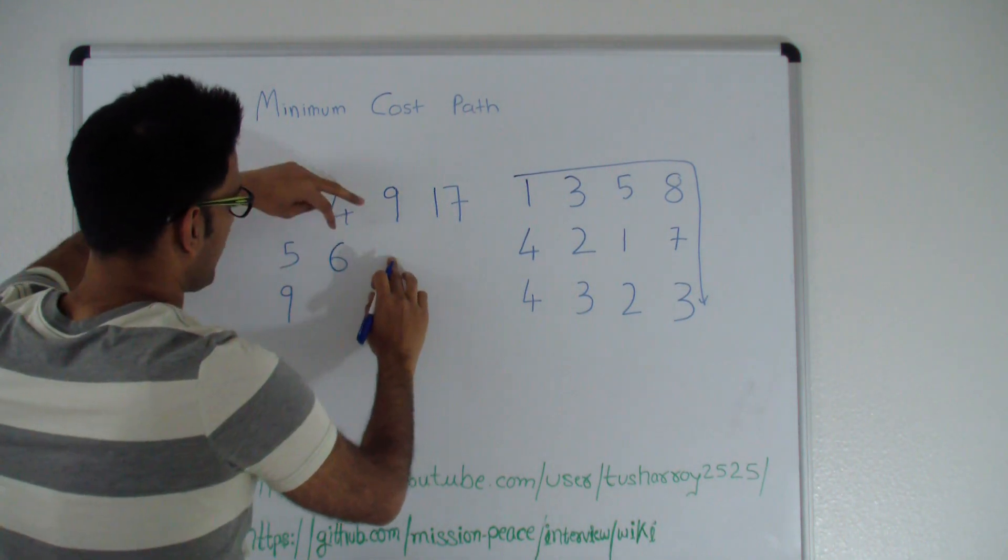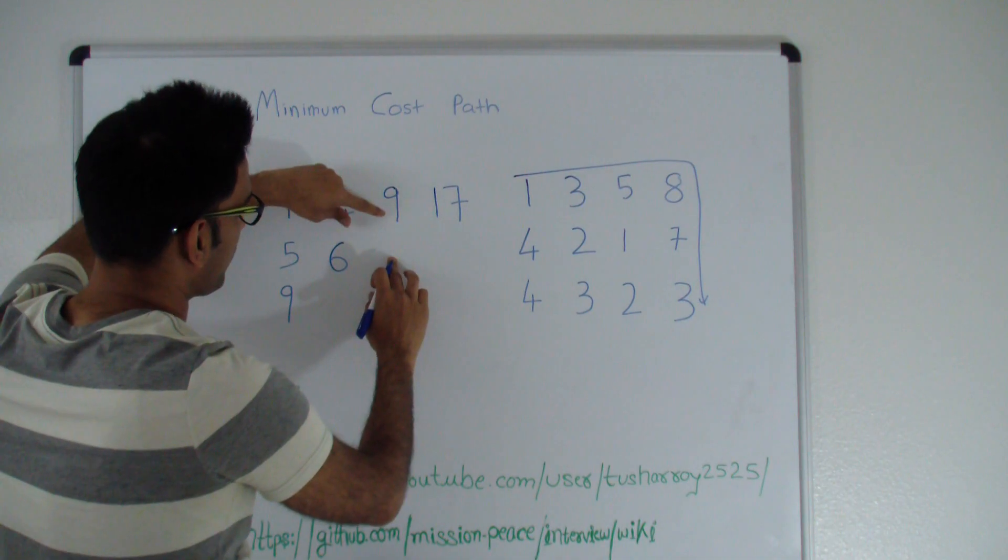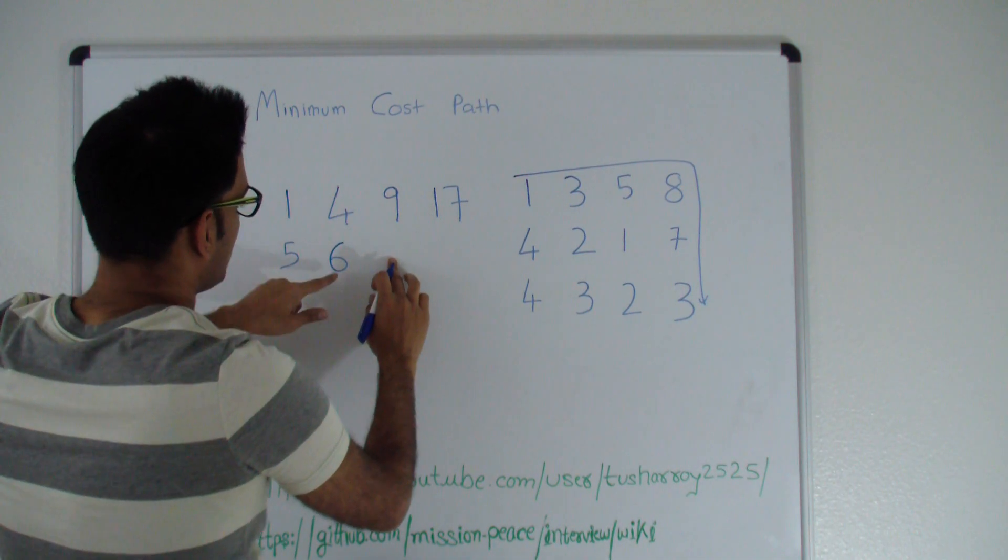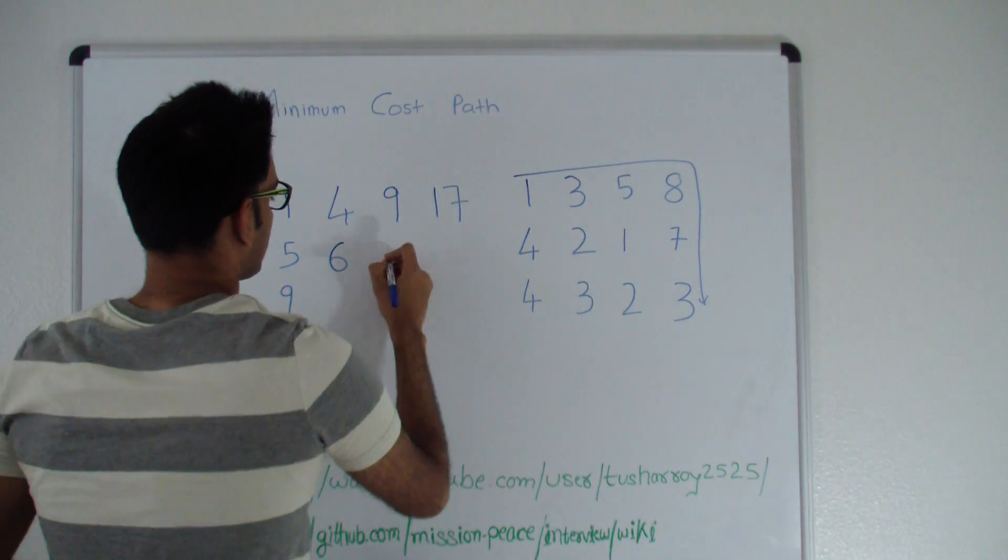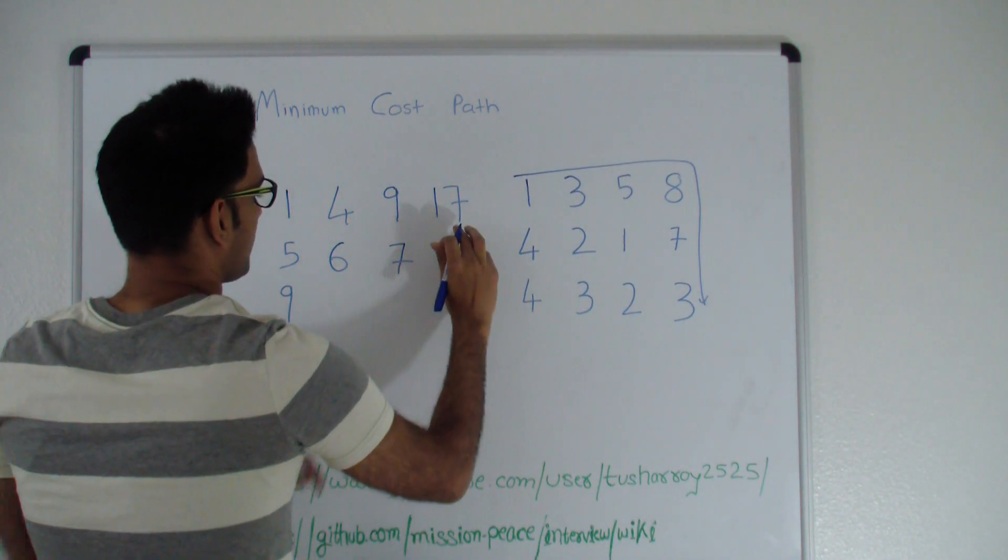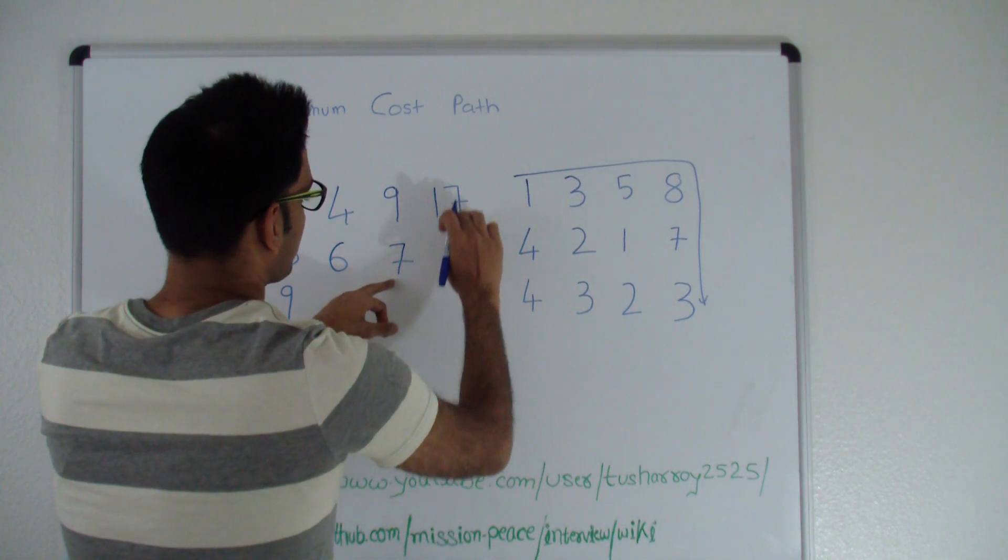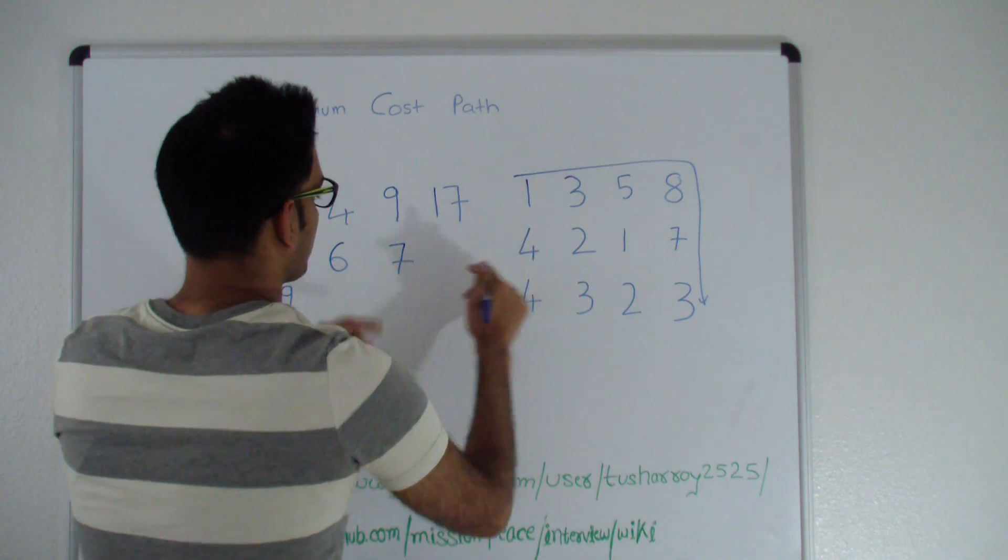When you're here, you have to ask yourself what is cheaper: to come from top or to come from left. The minimum is 6, so 6 plus 1 is 7. Similarly, it's cheaper to come from left rather than to come from top, so 7 plus 7 is 14.